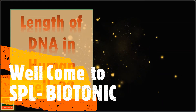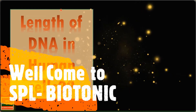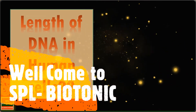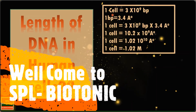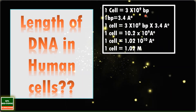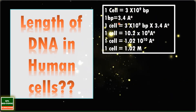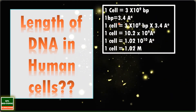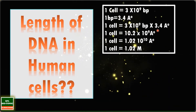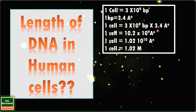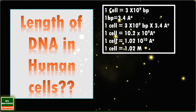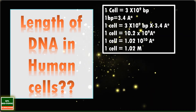Hi everyone, I hope you are doing well. Do you know what is the length of DNA in human cells? Let us calculate. One human cell has around 3 billion base pairs of DNA, and each base pair has a length of 3.4 angstrom. When we multiply 3 billion base pairs by 3.4 angstrom, we get an answer of around 1 meter of DNA per cell.